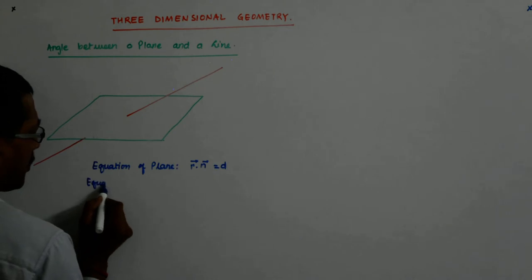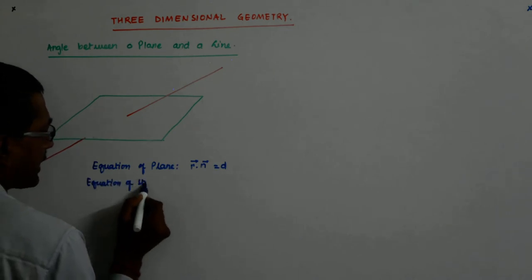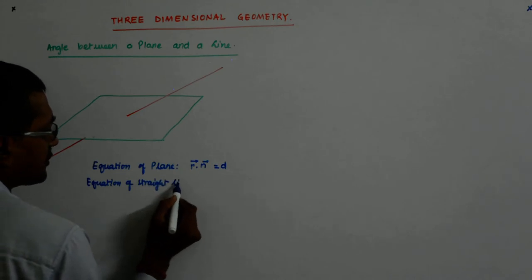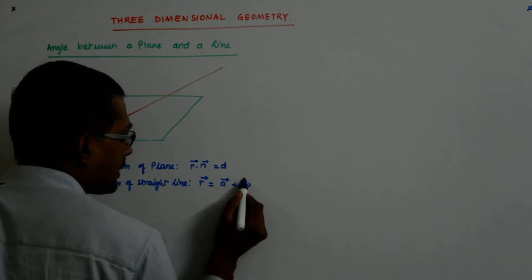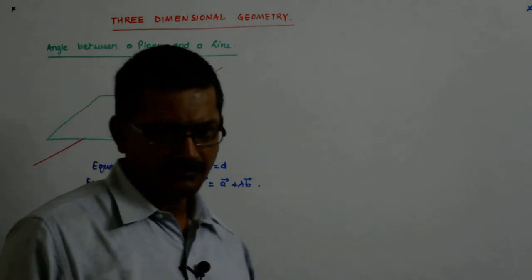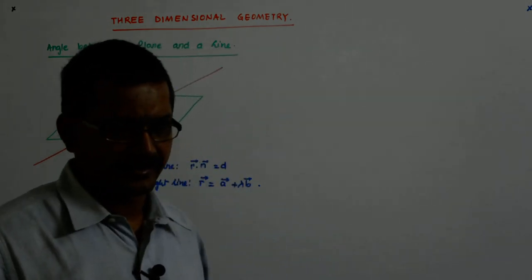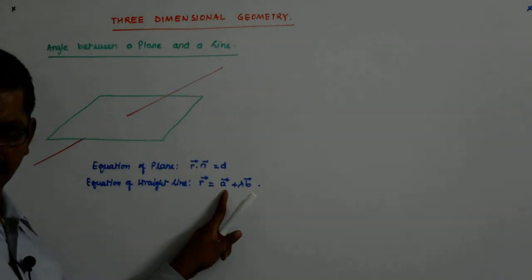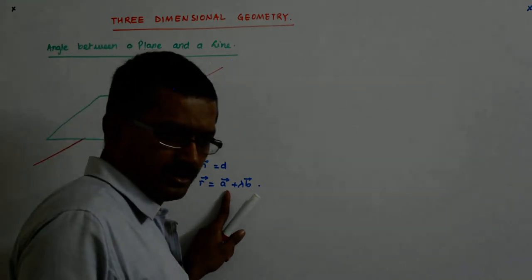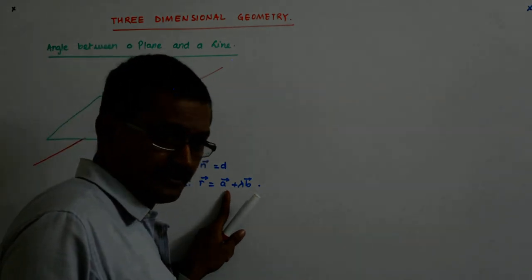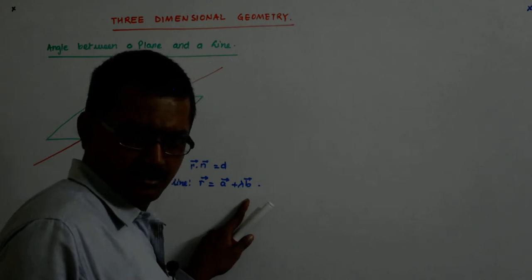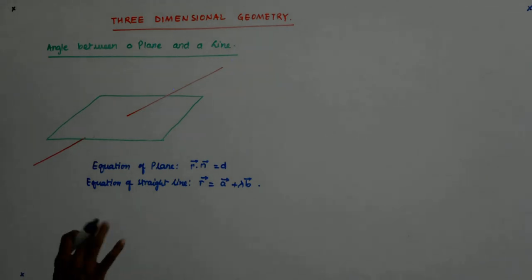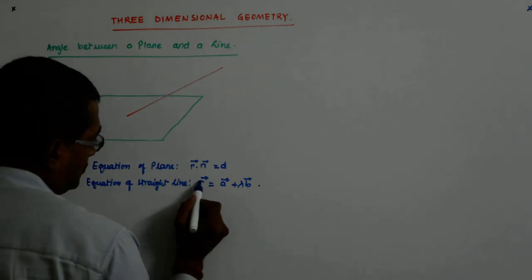And equation of straight line will be r is equal to a plus lambda b. And we know what a and b represent. A represents the position vector of the fixed point. And b is the vector to which the line is parallel. These things you should know.